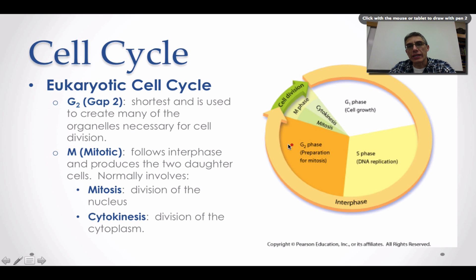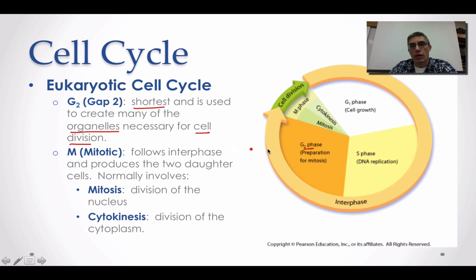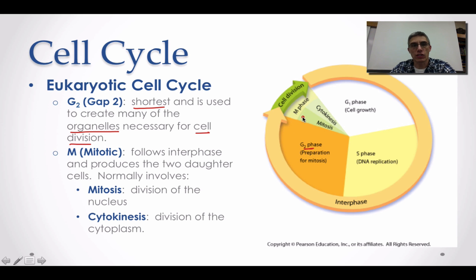The G2 or Gap 2 phase is the shortest phase for some cells, and it's often used to create the organelles and cell parts necessary for cell division. This is essentially preparation for mitosis, preparing the cell to enter the mitotic phase of the cell cycle.